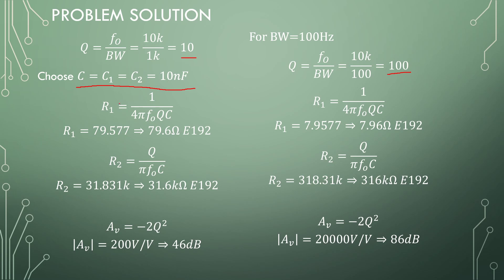Let's choose all the capacitors to be the same at 10 nF. From here on, it's plug and play. Resistor 1 will be 79.577 ohms, and resistor 2 will be 31.831 kΩ. Twice the Q factor squared is a gain of 200.